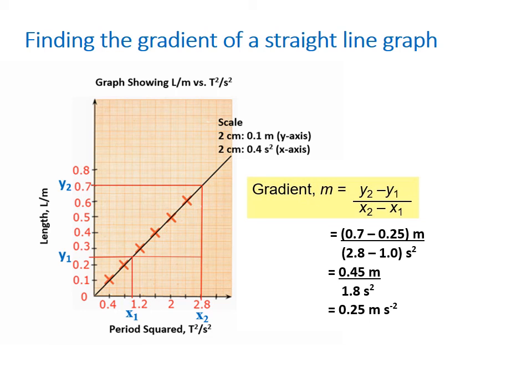So on our y-axis, the unit is meters. On our x-axis, the unit is seconds squared. So we keep our units so that we can identify the unit for our gradient. So given that on the y-axis is meters, and the answer that we get after subtracting is 0.45, so that's 0.45 meters, and the answer that we get for x-values after subtracting is 1.8 seconds squared. Then we would have our answer being 0.25 meters per second squared. So this is the value for our gradient. And that would be your answer, 0.25 meters per second squared. And you want to keep your units.